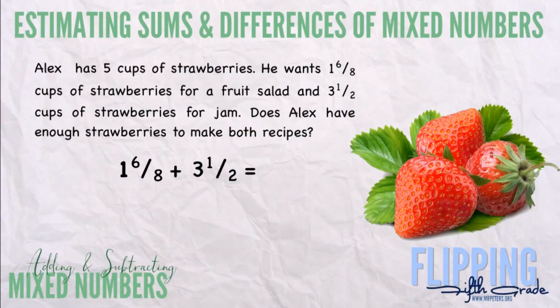Now we're going to learn how to estimate the sums and differences of mixed numbers. To estimate, we'll always round to the nearest whole number.